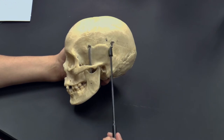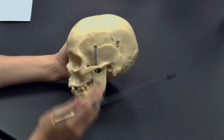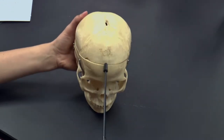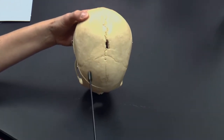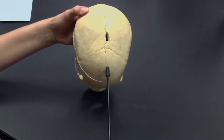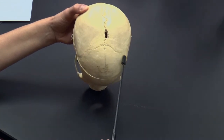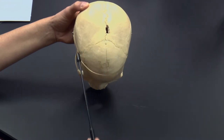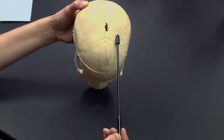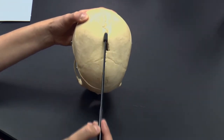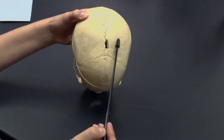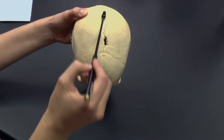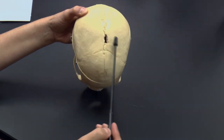A suture is a type of joint. Rotating towards the front and taking a look at the superior view, here's the frontal bone, and then there's a joint called the coronal suture — sort of like a crown. The coronal suture joins the frontal bone to the two parietal bones. Further along, this midline structure joining the two parietal bones from right and left is called the sagittal suture.